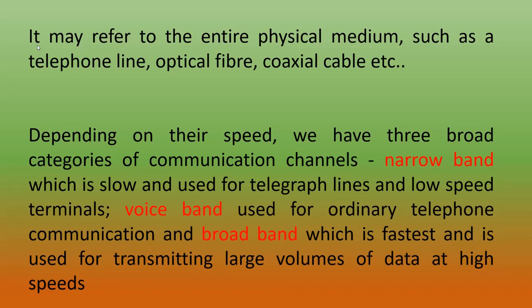The second one is voice band. Voice band is the ordinary method which is used in telephone communication. And the third one is broadband, which has high speed and is the fastest type of communication channel, used to transmit large amounts of data at high speed. So, three types of communication channels based on speed are narrow band, voice band, and broadband.